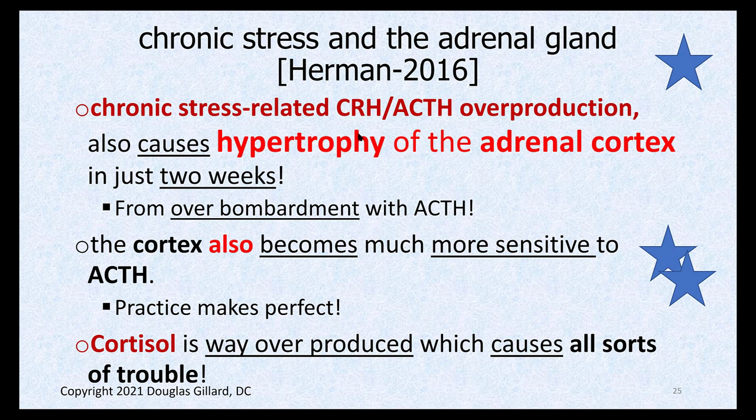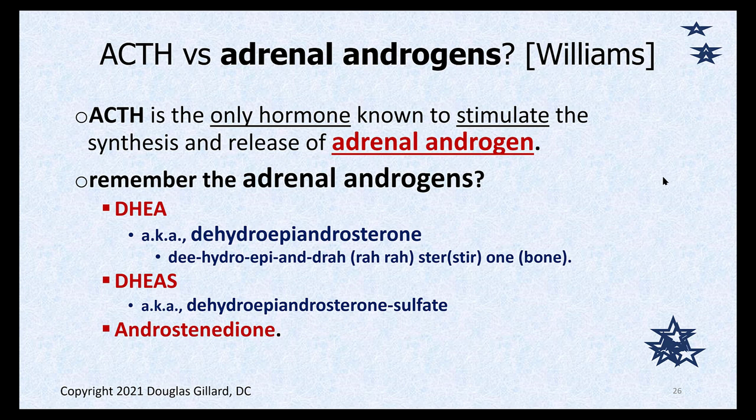You can see the consequences of chronic stress via biopsies. If you biopsy the adrenal gland, you'll see hypertrophy or thickening, mainly in the zona fasciculata, due to over-stimulation by ACTH. It takes just two weeks of ACTH overproduction to see histological changes. The adrenal cortex also becomes more sensitive to ACTH, cortisol is way overproduced, causing all sorts of trouble — as we'll cover when discussing Cushing's syndrome.